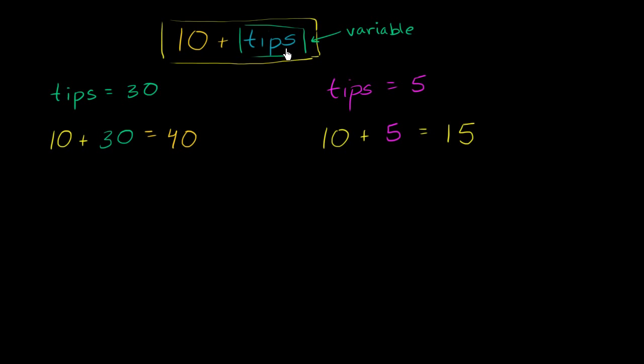Now, you won't see whole words typically used in algebra as variables. We get lazy, and so instead we tend to use just easier to write symbols. And so in this context, instead of writing tips, maybe we could have just written 10 plus t, where t represents the tips that we get in an hour.